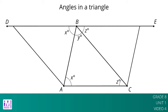We know that DBE is a straight line because 180-degree rotations take lines to parallel lines, as seen by the rotations of triangle ABC around the midpoint of AB and the midpoint of BC. So the three angles with vertex B make a line, and they add up to 180 degrees. X plus Y plus Z is equal to 180. But X, Y, and Z are the measures of the three angles in triangle ABC, so the sum of the angles in the triangle is always 180 degrees.